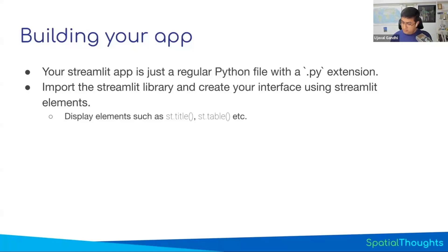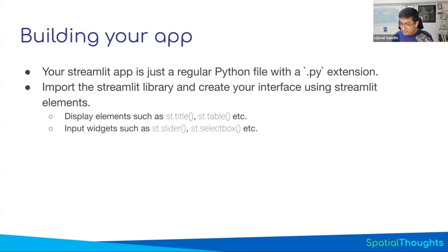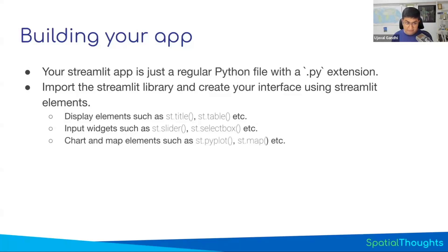Once you import Streamlit, you can say I want to display the title of my app — you say st.title, give the name, and it displays the title. You can say I want a slider, and just say st.slider to get a slider. You don't need to do any coding in JavaScript for the slider. If you've tried coding a slider in JavaScript you'd know it's a really difficult skill, but fortunately you don't have to. There are also built-in widgets for maps, and you can display any matplotlib or Seaborn plot inside your app as well.